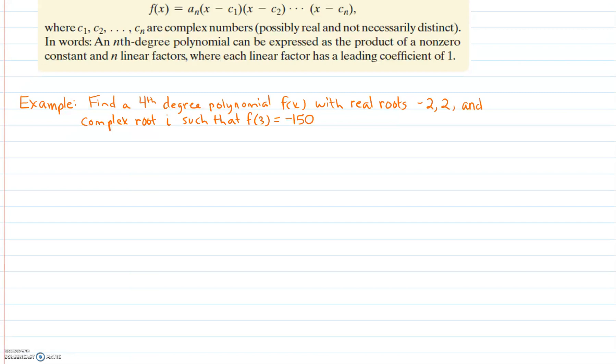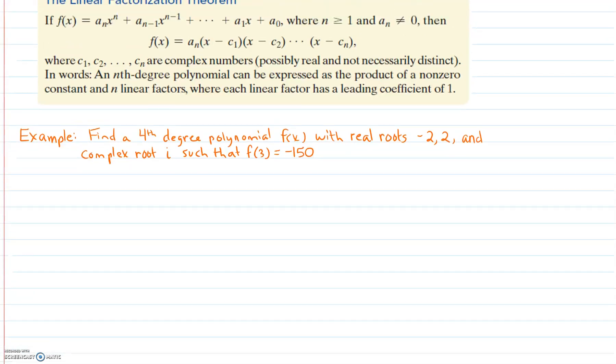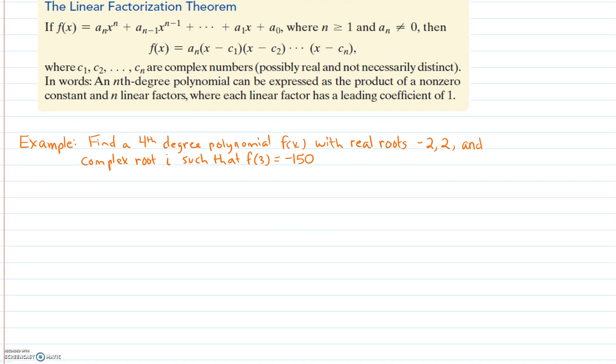The real goal here with linear factorization is we're going to be able to determine if there is some kind of coefficient. Normally you check to see if there's a coefficient other than one. Otherwise we can just take the roots, distribute, and come up with our function.